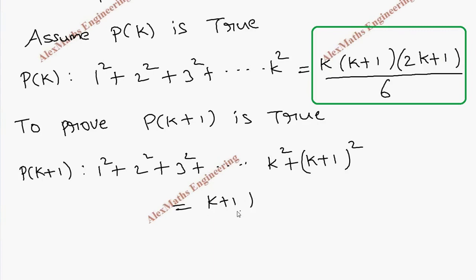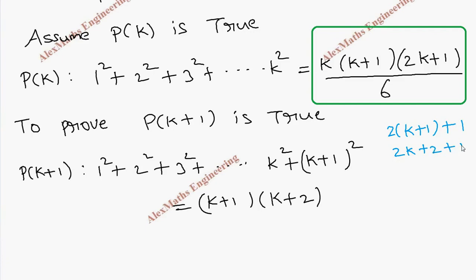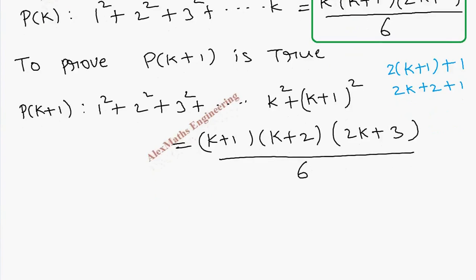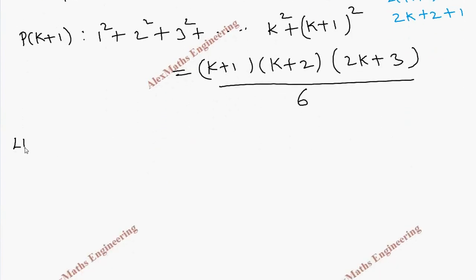When we substitute k+1 in place of k: the first factor becomes (k+1), the second factor becomes (k+1)+1 = (k+2), and the third factor becomes 2(k+1)+1 = 2k+2+1 = (2k+3). So the RHS of P(k+1) is (k+1)(k+2)(2k+3) divided by 6.